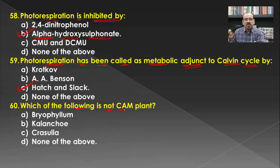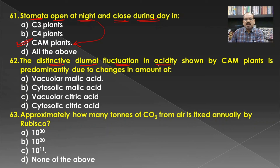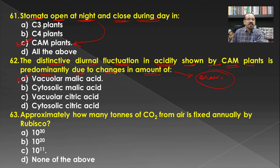Which of the following is not a CAM plant? Bryophyllum, Kalanchoe, and Crassula are all CAM plants. Hence none of the above is the answer. Stomata are open at night and closed during the day in crassulacean acid metabolism (CAM) plants. The distinctive diurnal fluctuation in acidity shown by CAM plants is predominantly due to changes in the amount of malic acid in the vacuoles. Hence A is the correct answer.